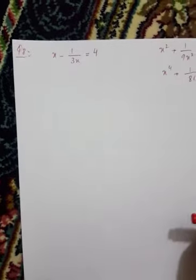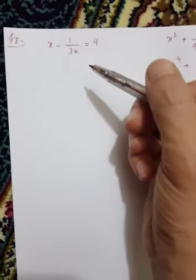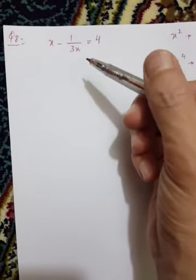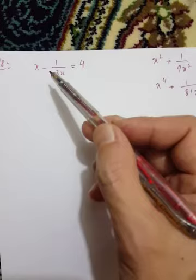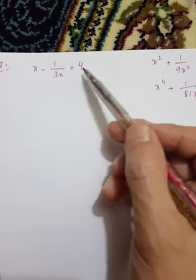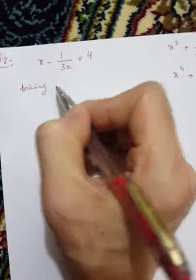Hope those are question number eight. This question comes with a problem. The equation is x minus one over three x equals four. We need to solve this by taking square on both sides.